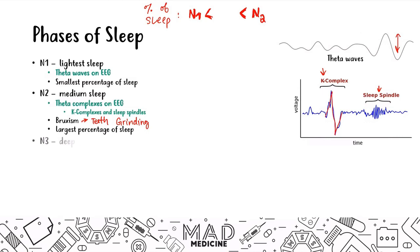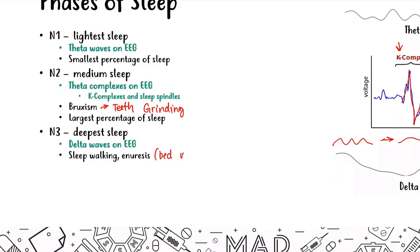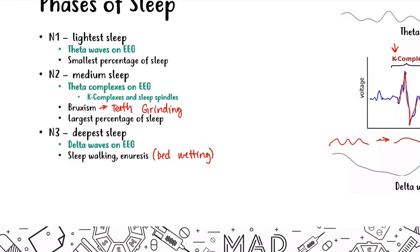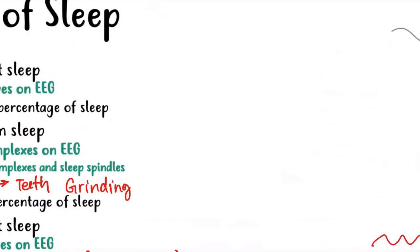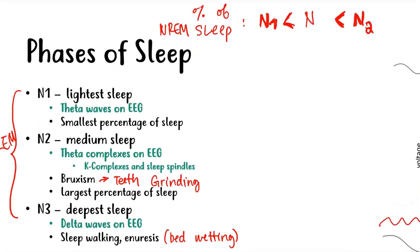After N2 you have N3, this is your deepest sleep with delta waves on the EEG. I like to think about delta waves as very deep waves. The waves are not very consistent, it looks spread out. You also have sleepwalking and enuresis or bedwetting occurring here. These are your three phases of non-REM sleep.